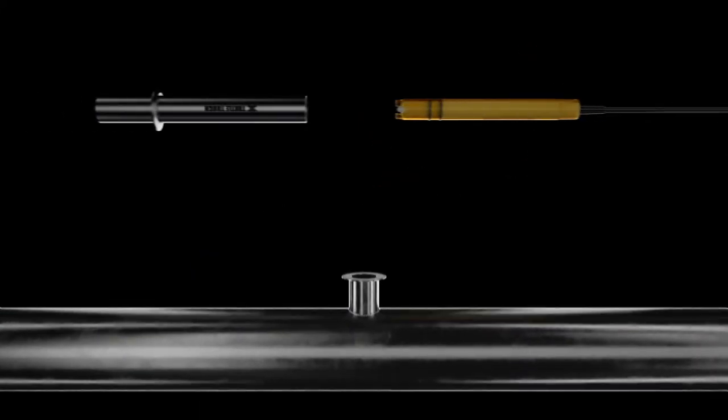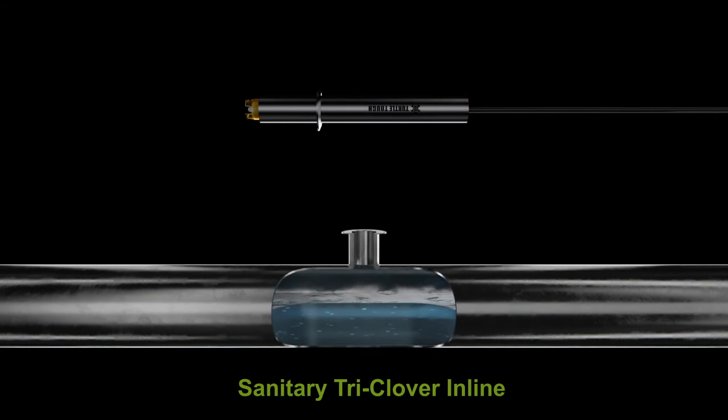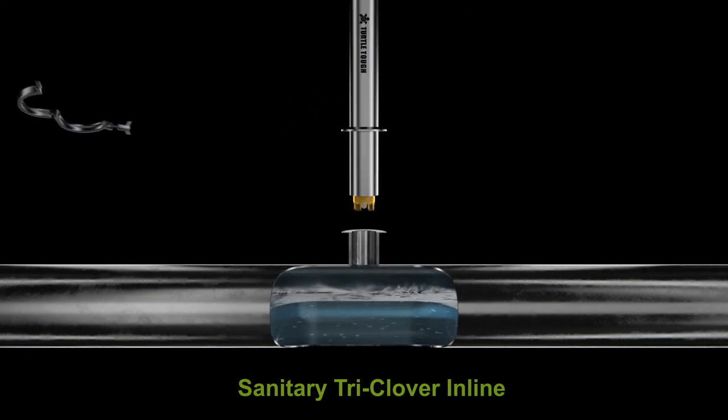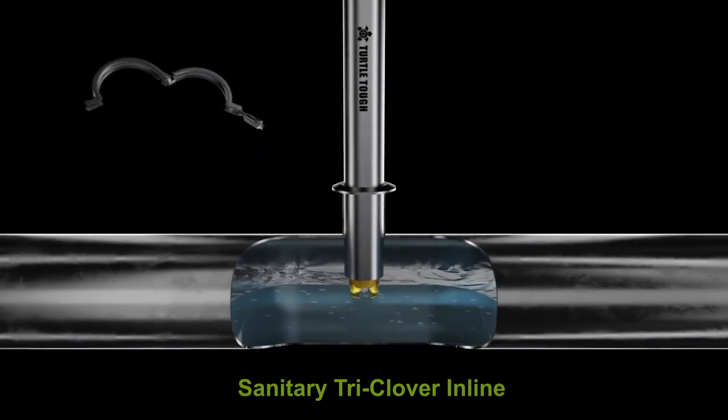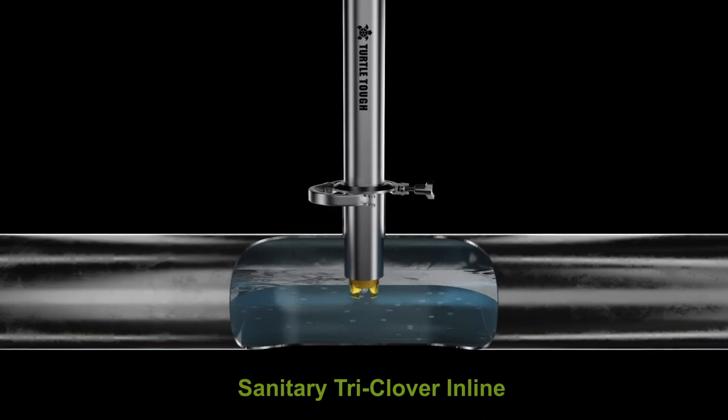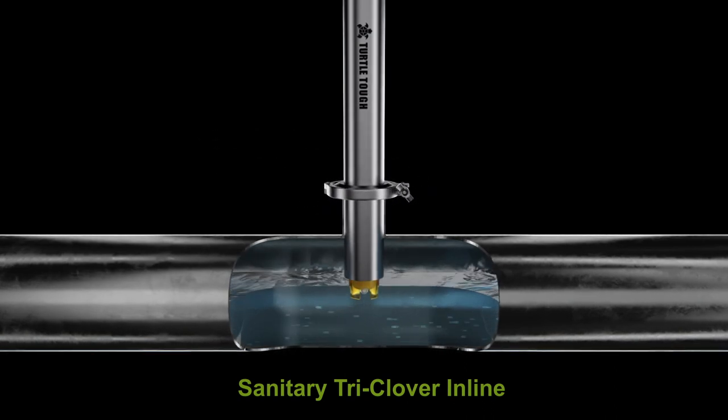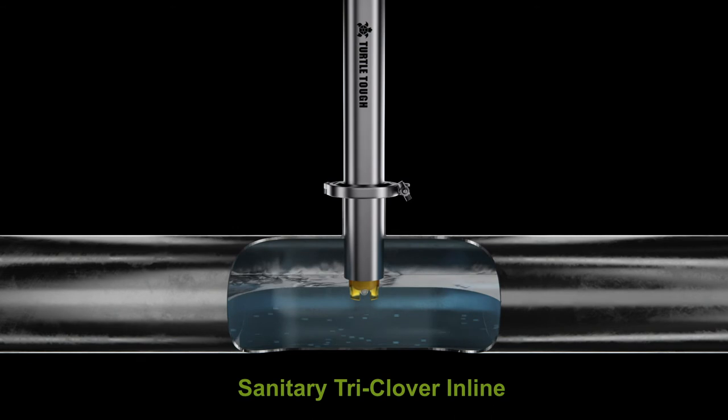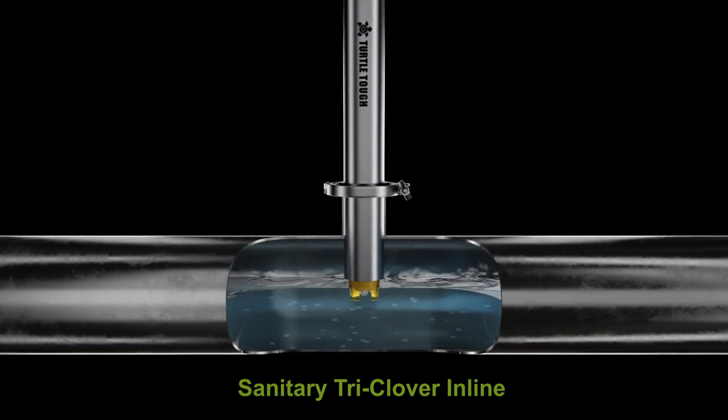Designed for installations with tri-clover fittings, the Turtle Tough sanitary sensor holder provides protection from extreme process environments such as fast process flow or high temperature. This installation is perfect for applications where the line can be isolated or shut off.